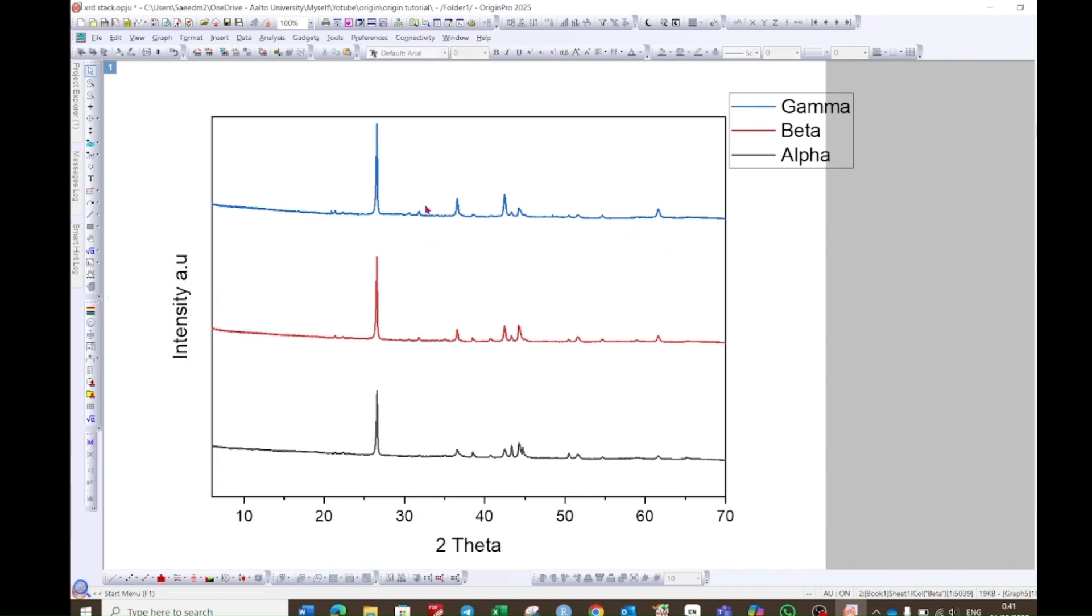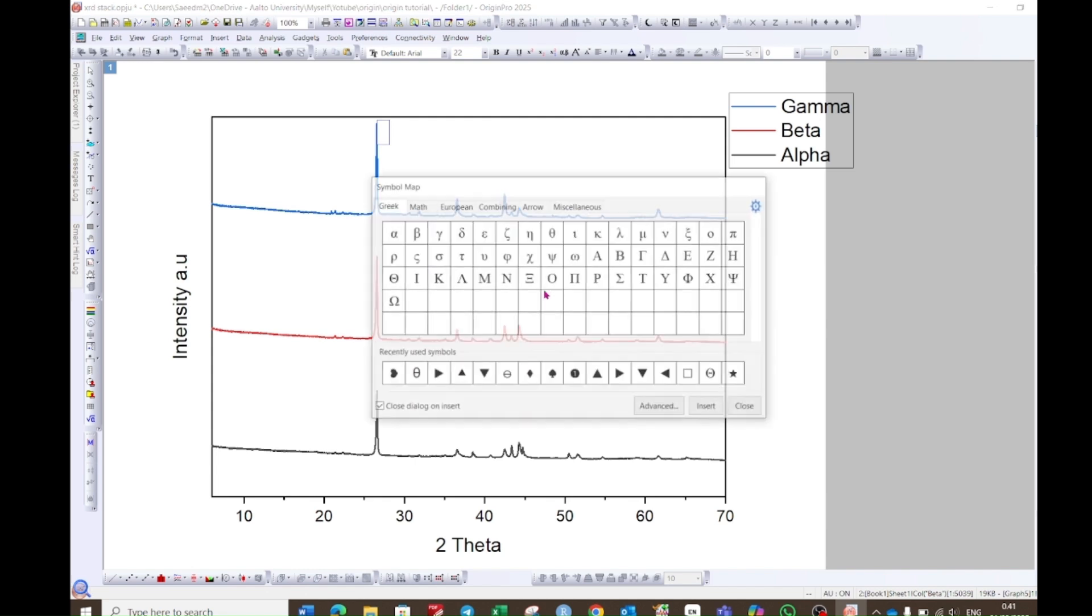Now if we have to give different symbols to different peaks, choose this text option from this toolbar. Make a single click and then right-click in this box. Go to insert and then symbol map. A window will pop up.